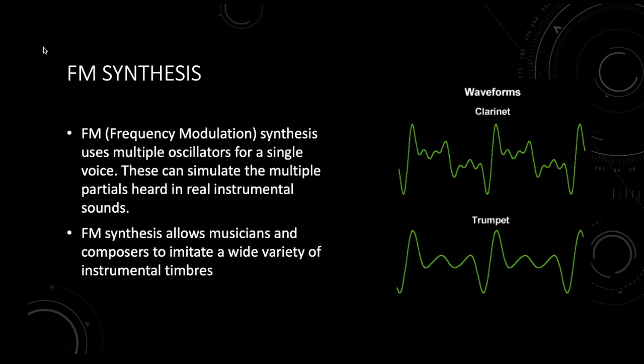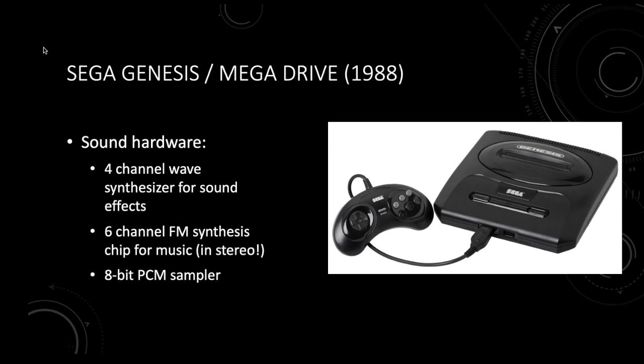FM synthesis imitates the sound of a trumpet much, much better than a single waveform ever could. FM synthesis is really what drives the synthesizers of the 1980s. When you listen to a Yamaha synthesizer on an 80s music video, you're hearing FM synthesis. FM synthesis is used in the next generation of console games after the Nintendo — for example, the Sega Genesis, which was called the Mega Drive outside of North America.